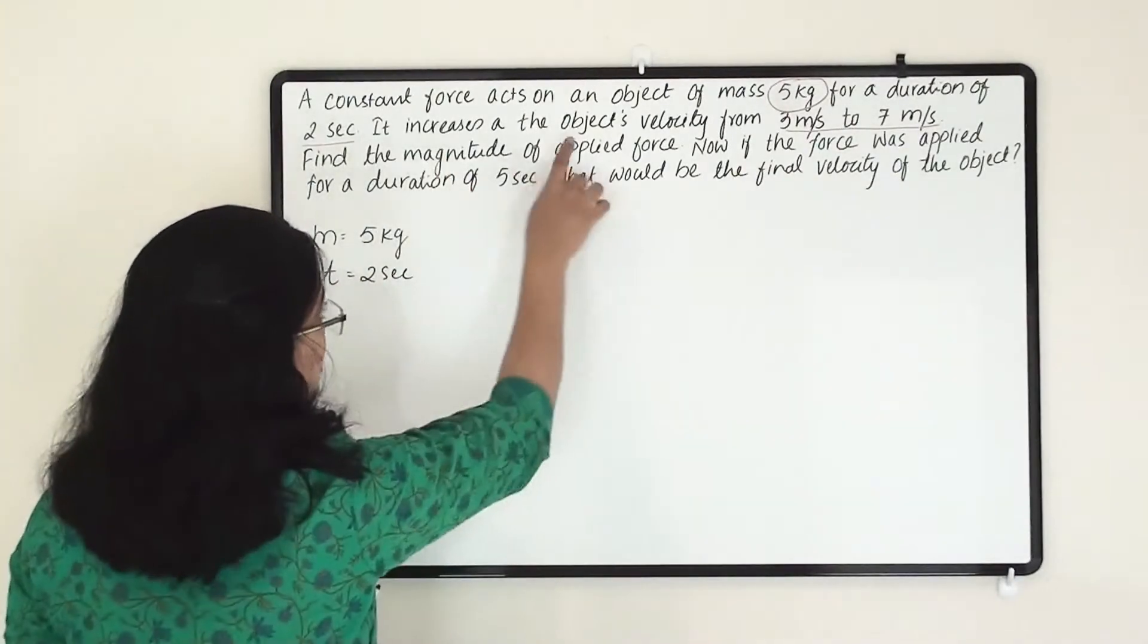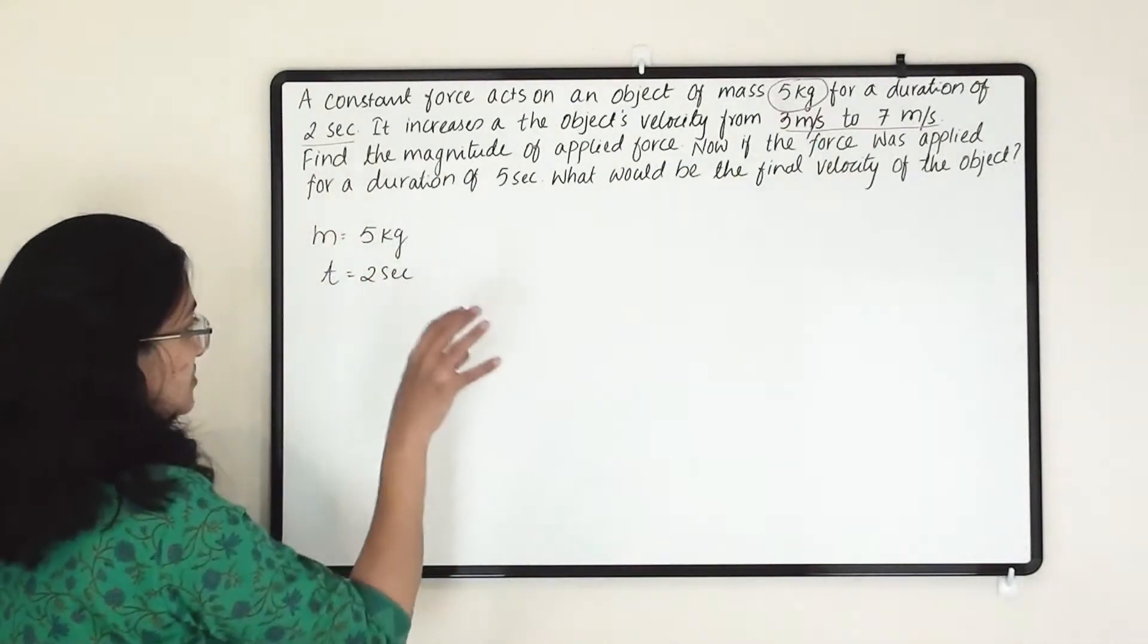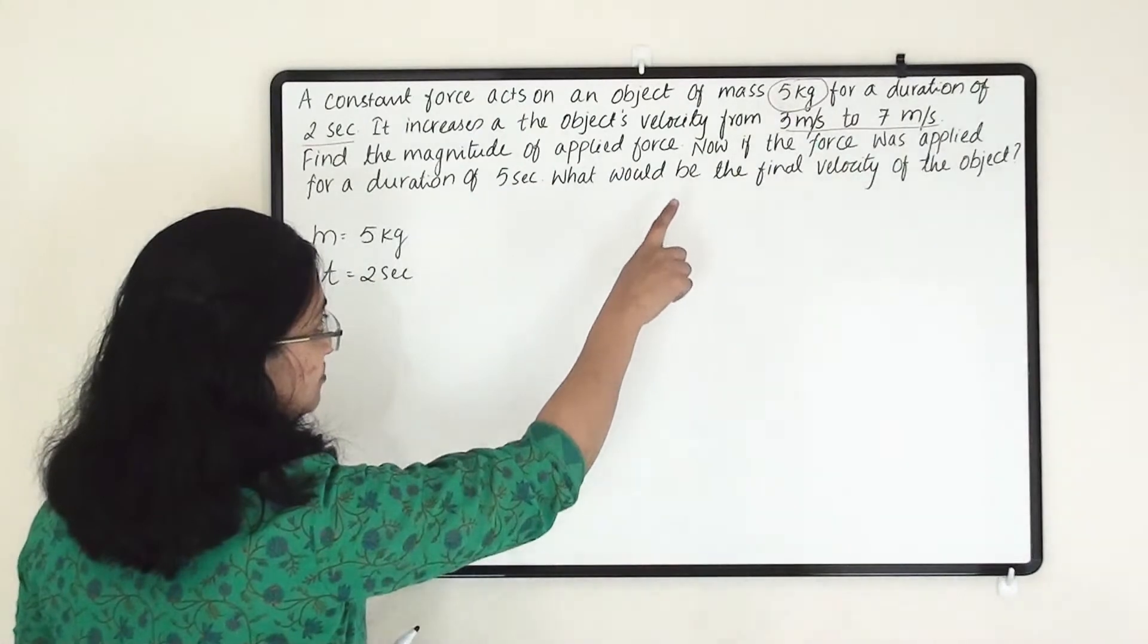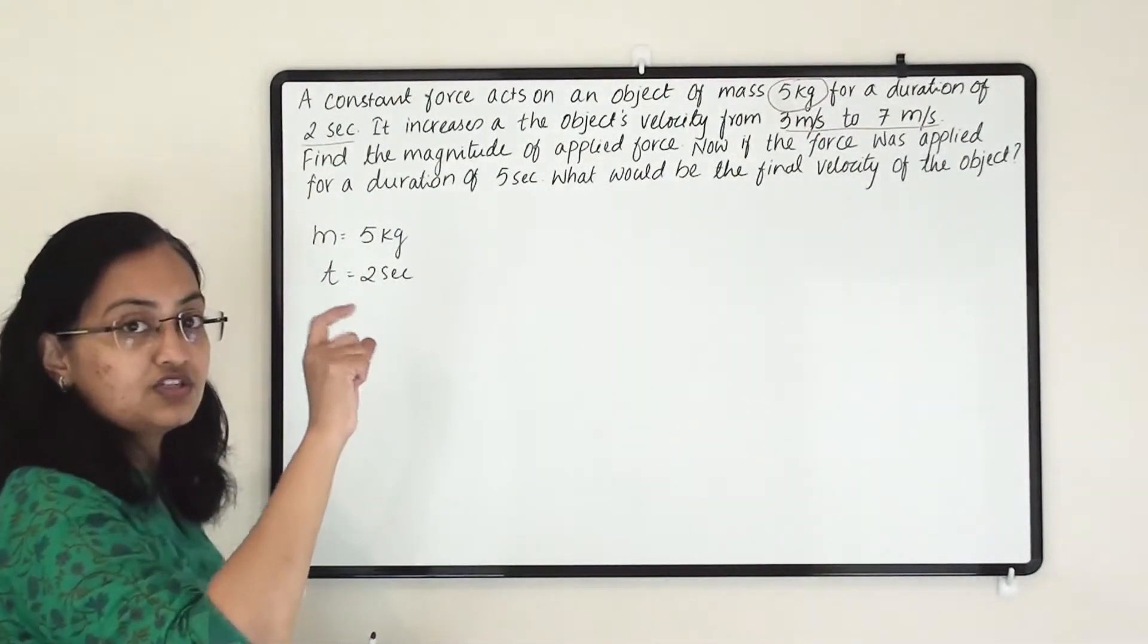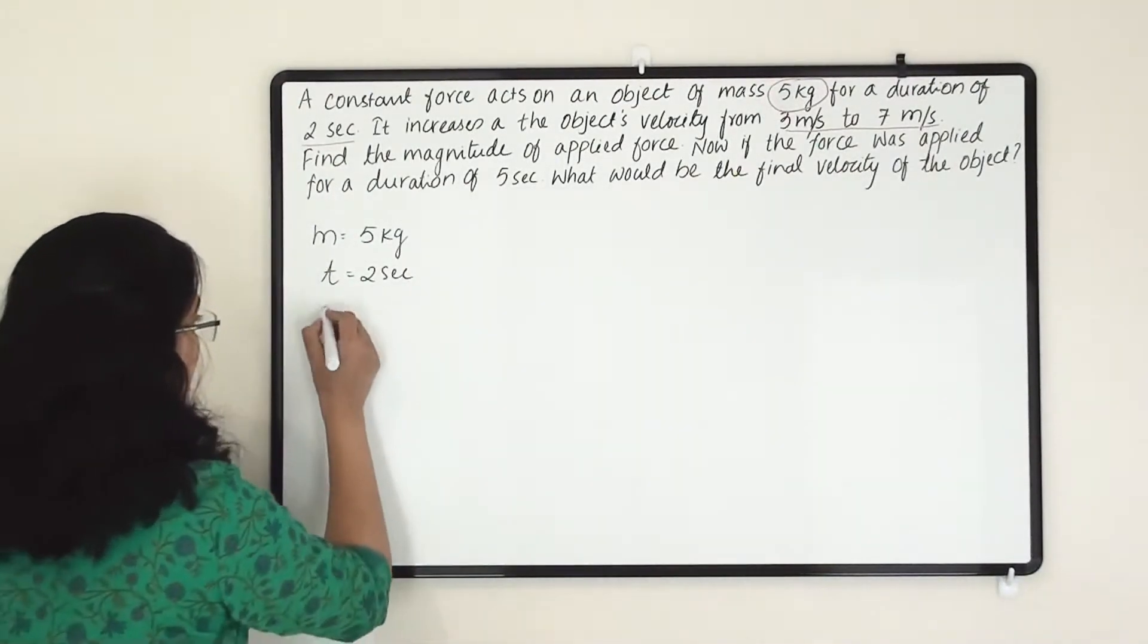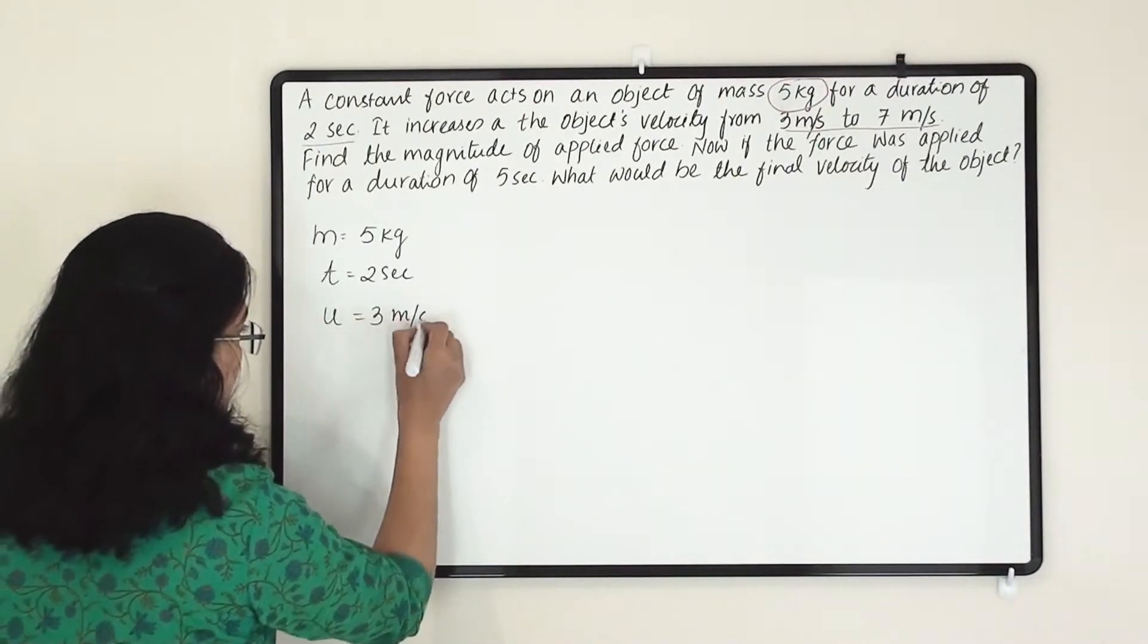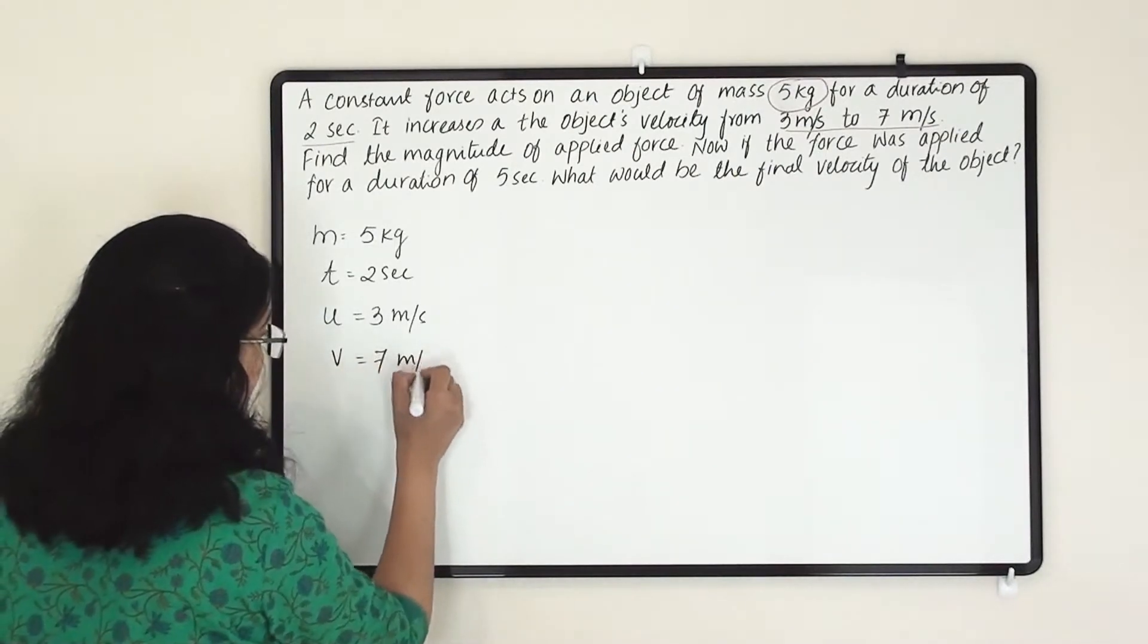Then it is changing object's velocity because of this force. Whatever force has been applied for 2 seconds, it has changed its velocity from 3 meter per second to 7 meter per second. That means initial velocity was 3 and afterwards it has become 7. So initial velocity is u, that is 3 meter per second. Now final velocity has become 7 meter per second.